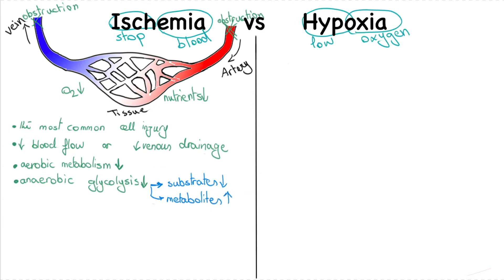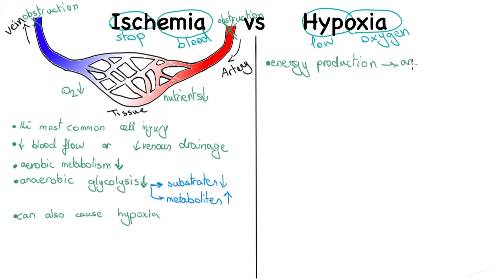Ischemia, among other problems, can also result in hypoxia. In hypoxia, on the other hand, energy production continues via anaerobic glycolysis — unlike ischemia, in which delivery of substrates for glycolysis is simply compromised.